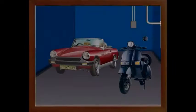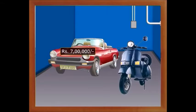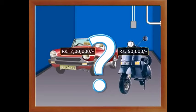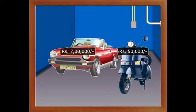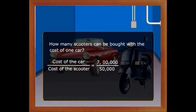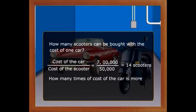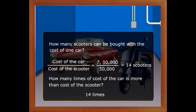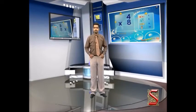Let us recollect all that we know so far. The cost of a car is seven lakh rupees and the cost of a scooter is fifty thousand rupees. Which item's cost is more? Obviously the cost of the car is more. How many scooters can be bought with the cost of one car? Cost of the car divided by cost of the scooter equals seven lakhs divided by fifty thousand, which equals fourteen scooters.